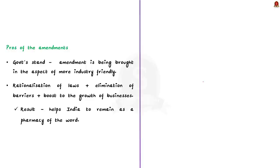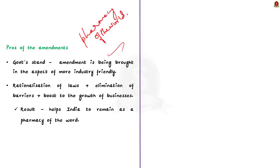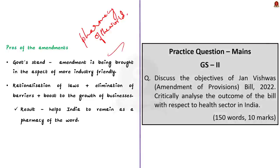Regarding the pros associated with the amendment: responding to concerns raised by various groups, the Indian government said the amendment is brought from the aspect of being more industry-friendly. India is regarded as the 'pharmacy of the world,' so to retain this position, India needs to ensure the production of the best medicines while offering reasonable benefits to business. Therefore, the government points out that rationalization of laws, elimination of barriers, and a boost to business growth are important to maintain the supremacy of the Indian pharma sector. That concludes the discussion on the Jan Vishwas Amendment of Provisions Bill 2022.